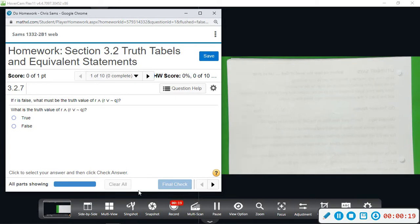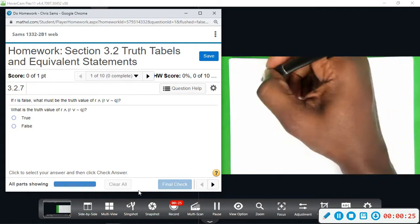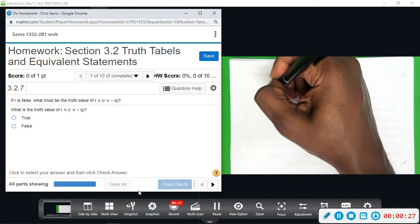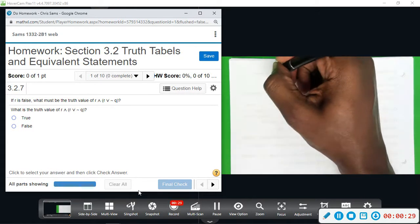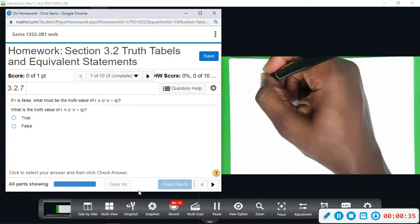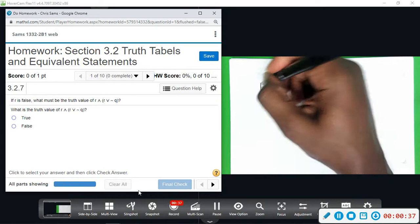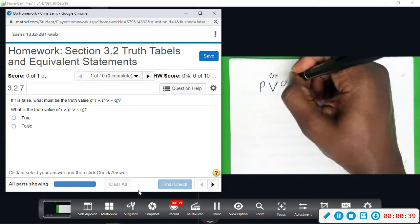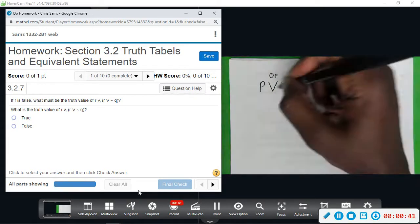Whenever you see this symbol, this V-shape, which means OR - so just for example, if I say P or Q, these are the traditional letters that we use, P or Q.